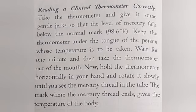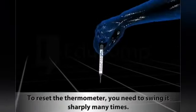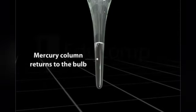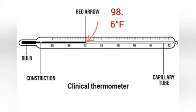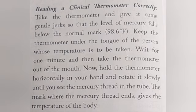Next is reading a clinical thermometer correctly. First, give the thermometer a gentle shake so that the level of mercury falls below the normal mark of 98.6 degree Fahrenheit. Then keep the thermometer under the tongue of the person whose temperature is to be taken, or in the armpit for children. Wait for a minute and then take out the thermometer. Hold it horizontally and rotate it slowly until you see the mercury thread in the tube. The mark where the mercury thread ends gives the temperature of the body.